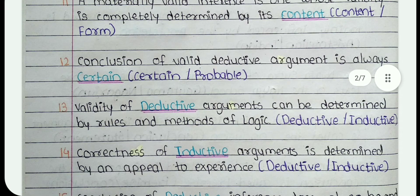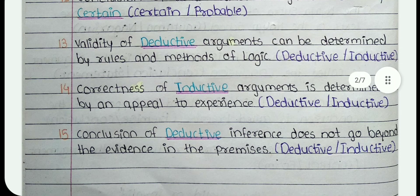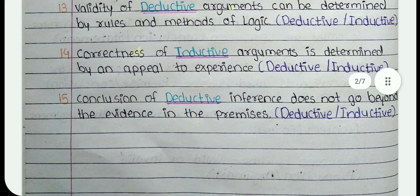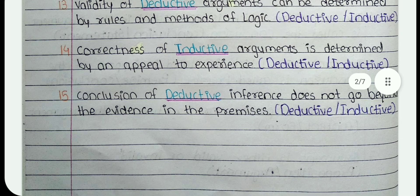12. Conclusion of valid deductive argument is always Dash. The answer is Certain. 13. Validity of Dash arguments can be determined by rules and methods of logic. The answer is Deductive. 14. Correctness of Dash arguments is determined by an appeal to experience. The answer is Inductive.